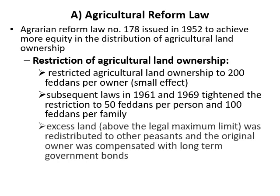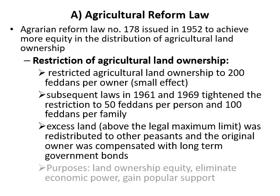Excess land above the legal limit was redistributed to other farmers, and the original land owners were compensated with long-term government bonds. The main target of that reform was to achieve more equity in land ownership, eliminate economic power of large landholders, and gain popular support.